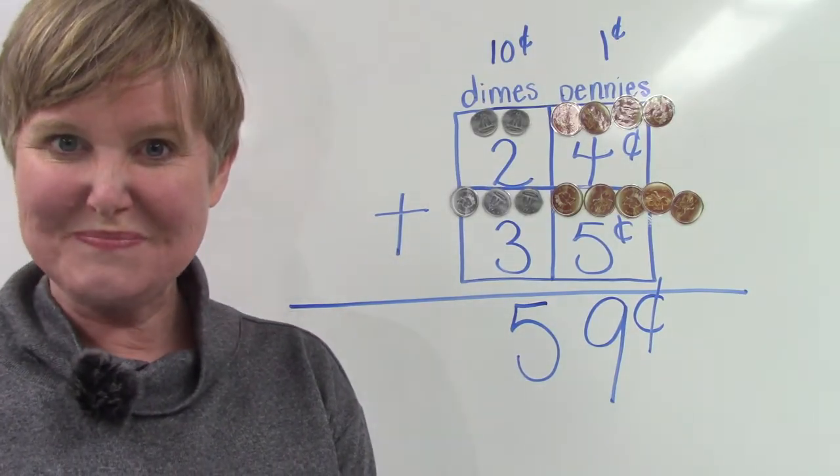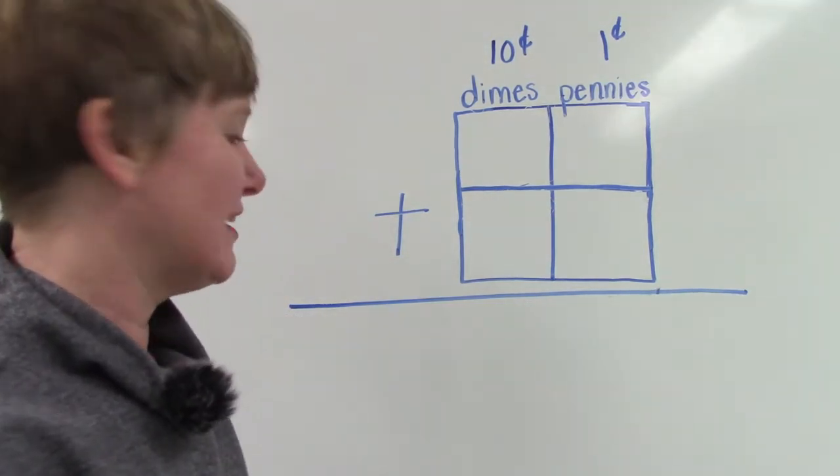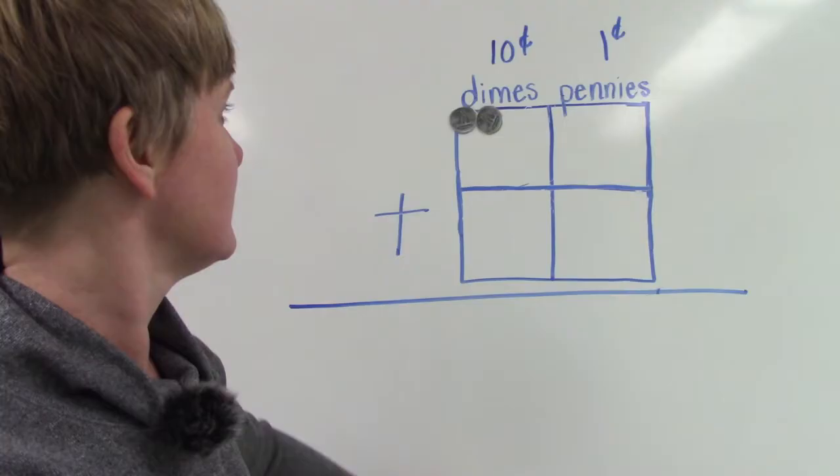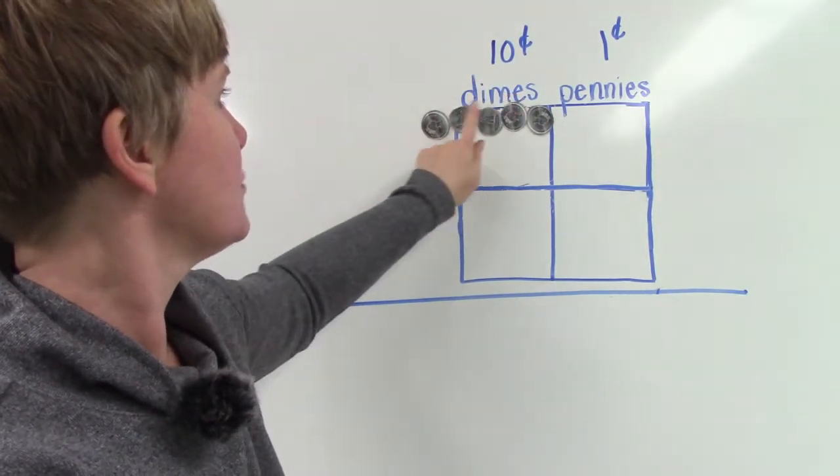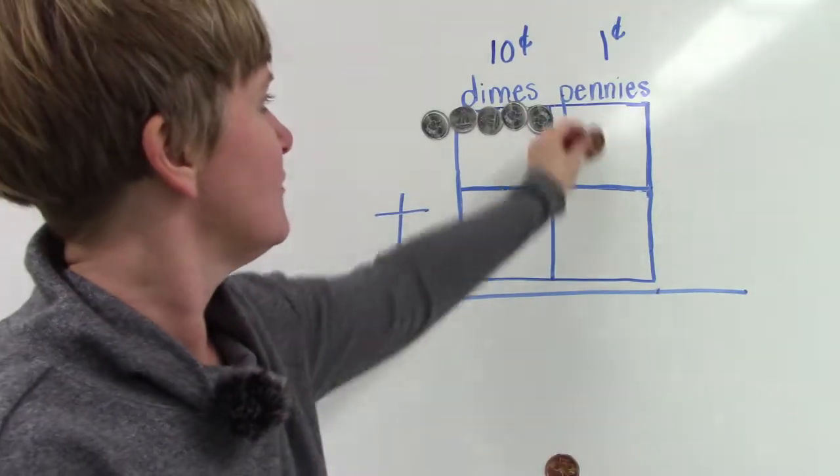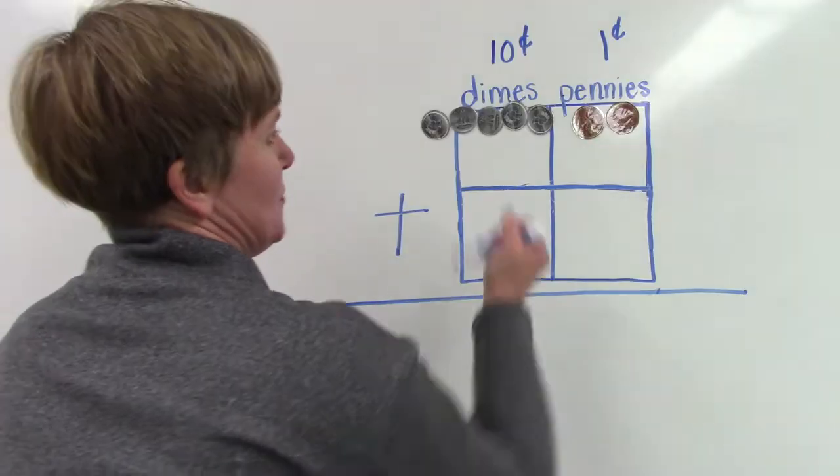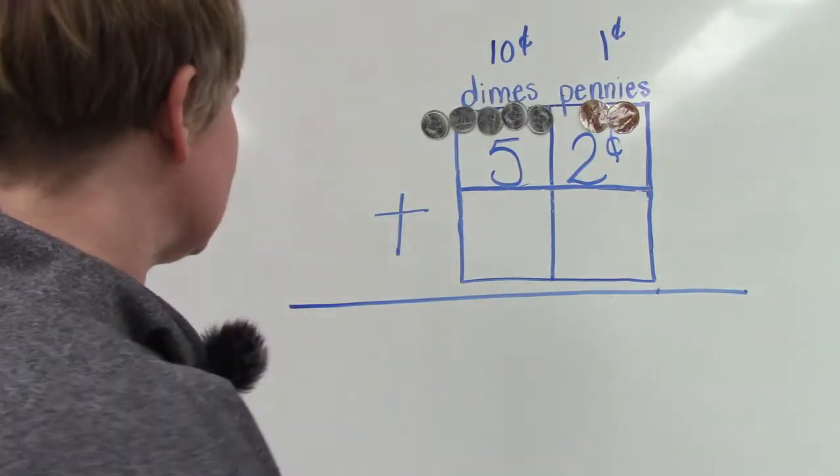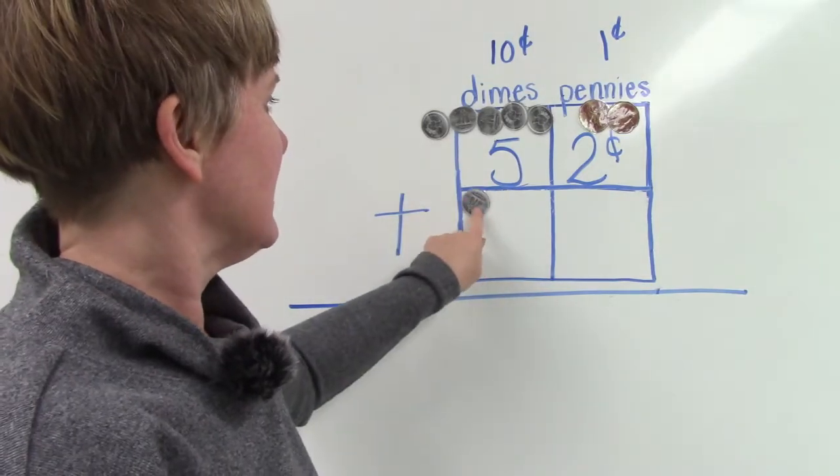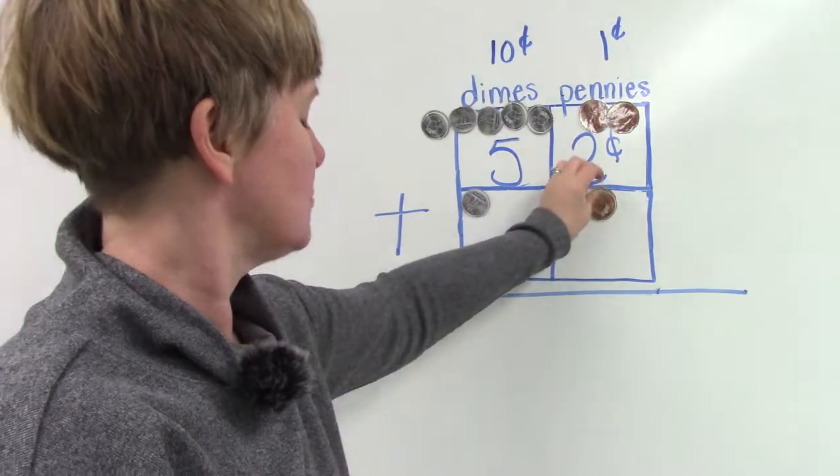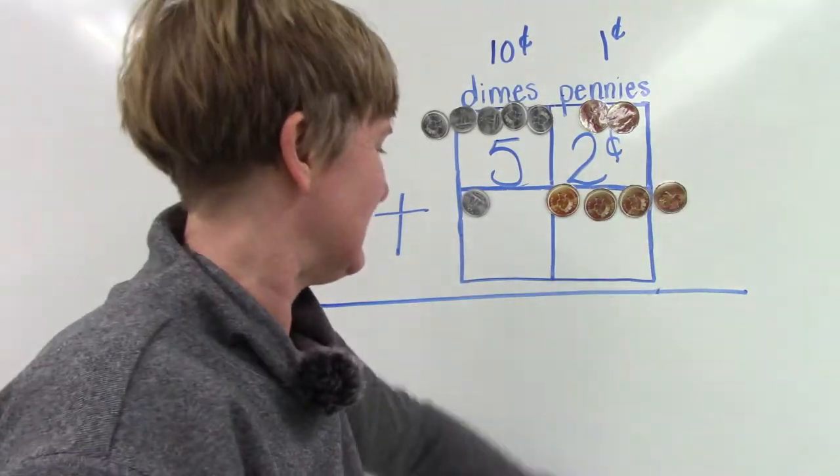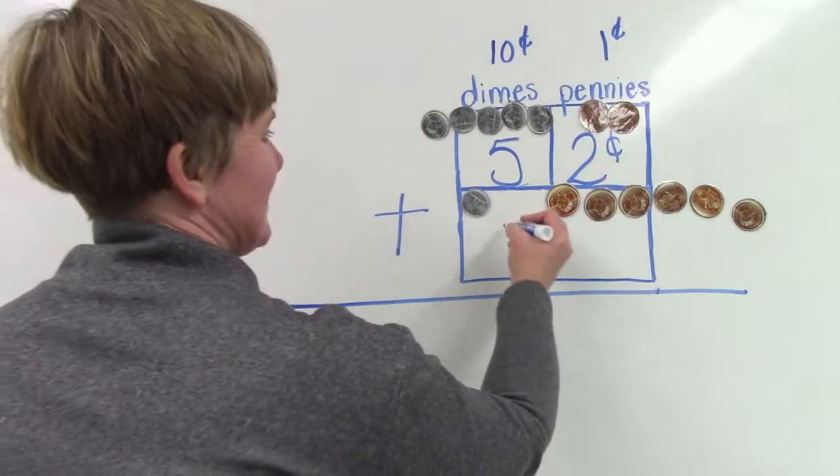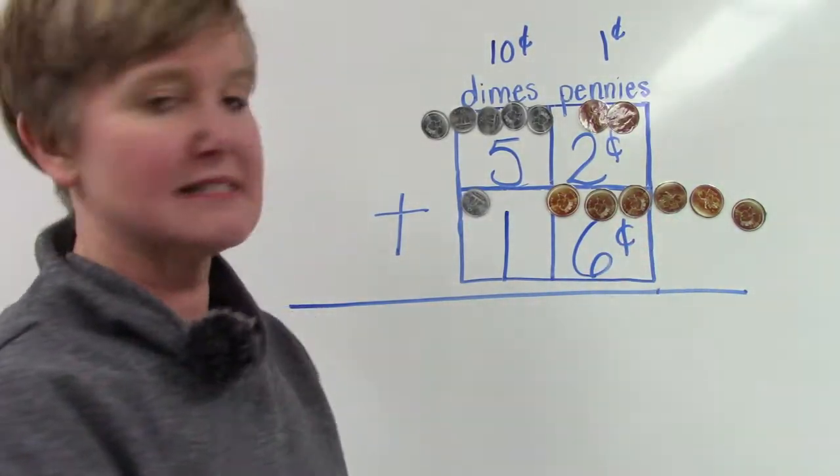Let's look at another question. All right. This time we are going to add 52 cents. Well, for 52 cents, we would need to have five dimes. 10, 20, 30, 40, 50, 51, 52. So we have 52 cents. And now we are going to add 16 cents to that. Count with me. 10, 11, 12, 13, 14, two more, 15, and 16. So we have 52 cents plus 16 cents.